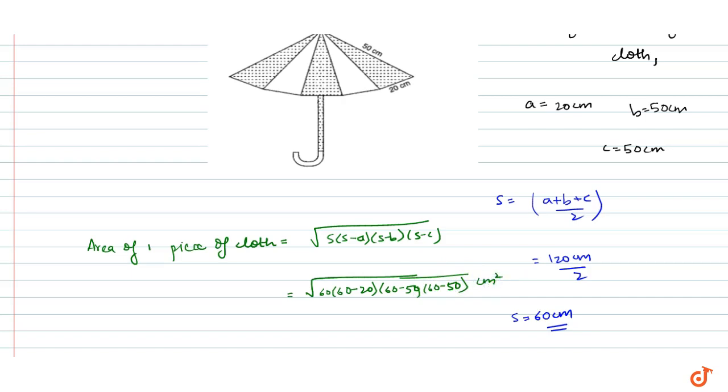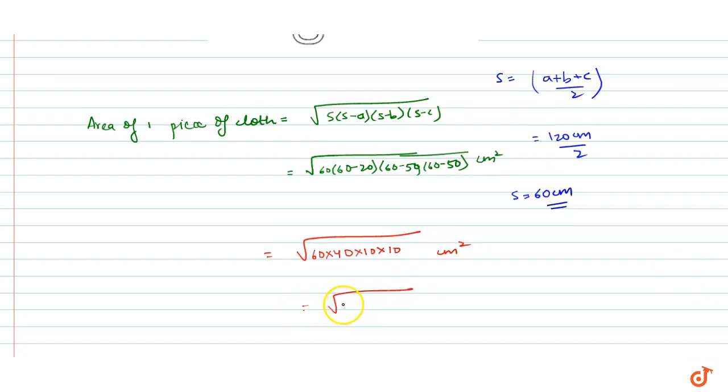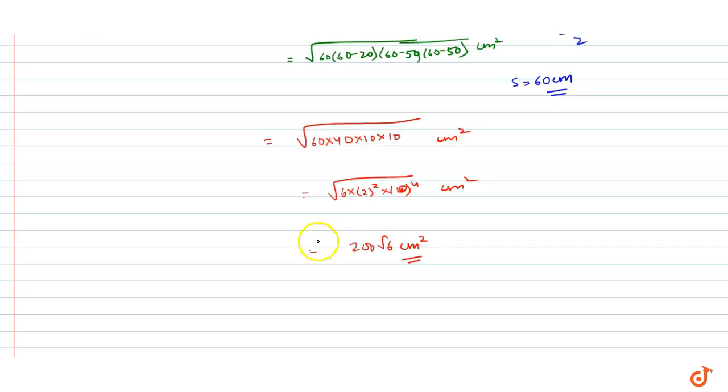This equals the square root of 60 times 40 times 10 times 10 centimeters squared. We can write this as the square root of 6 times 2 squared times 10 to the power 4 centimeters squared, which equals 200 root 6 centimeters squared.